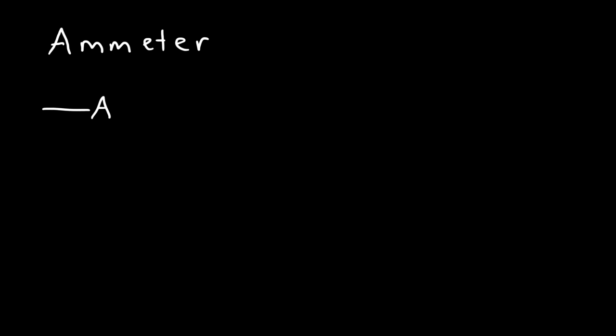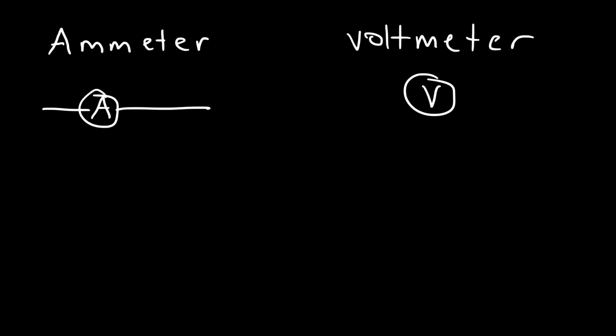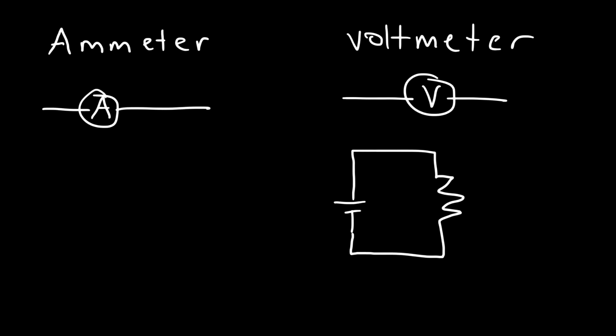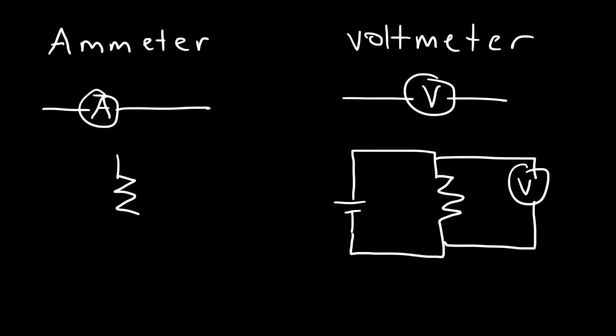In this video we're going to talk about ammeters and voltmeters. If you want to measure the current in a circuit you want to use an ammeter — the symbol is an A in a circle. If you want to measure the voltage across a device you need to use a voltmeter, with the symbol V. If you have a resistor and want to calculate the voltage across it, you need to connect the voltmeter across the resistor. To calculate the current flowing in a circuit, you need to connect the ammeter in series with the resistor.